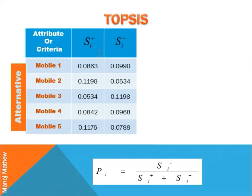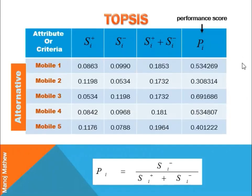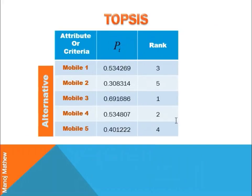These are the Euclidean distances from the ideal best and the ideal worst. Now the performance score is calculated — it is denoted by PI. We add the two Euclidean distances, and then the Euclidean distance from the negative ideal solution is divided by that sum. Based on the performance score we can rank the alternatives. Mobile 3 is the best alternative as it has the maximum value.